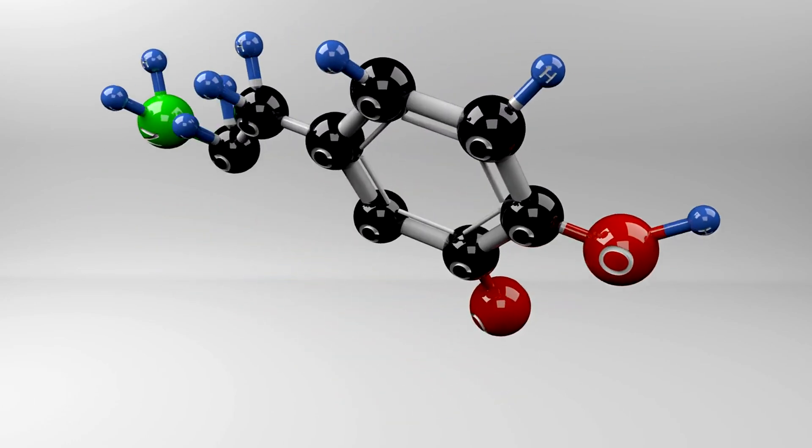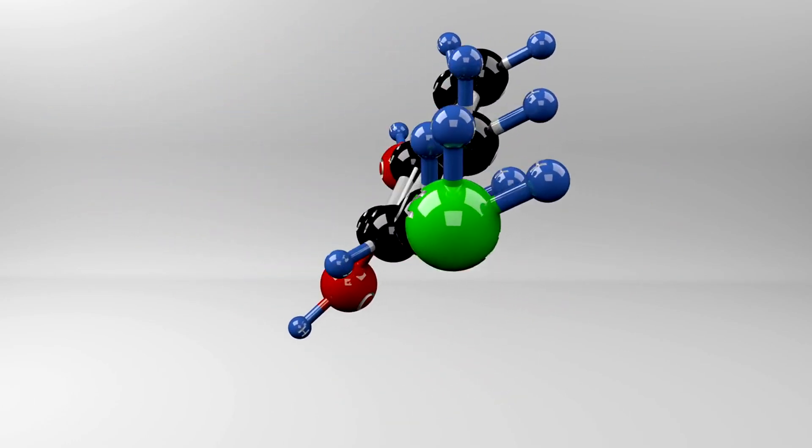Neurotransmitters are chemicals that transmit signals across a synapse from one neuron to another. Some key neurotransmitters include dopamine, serotonin, acetylcholine, and GABA.